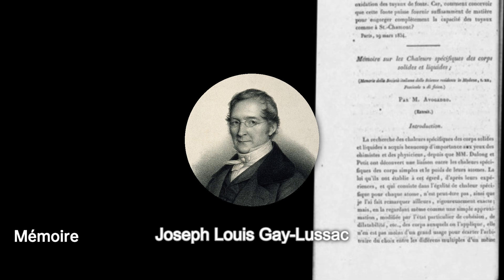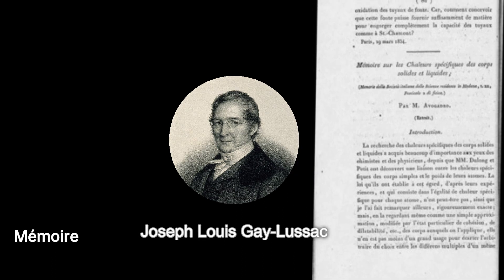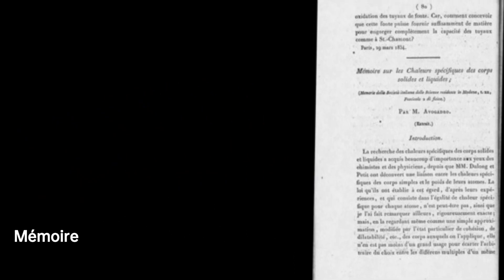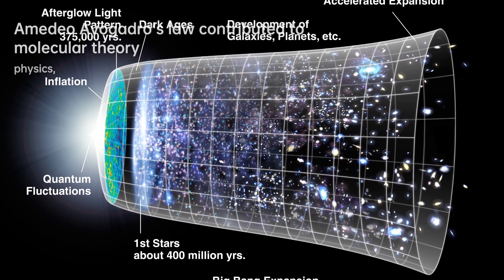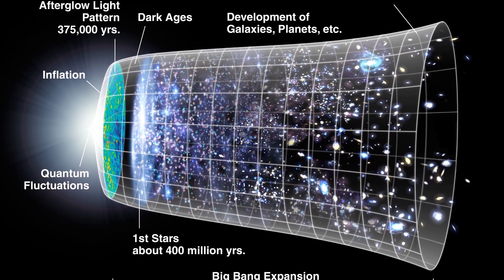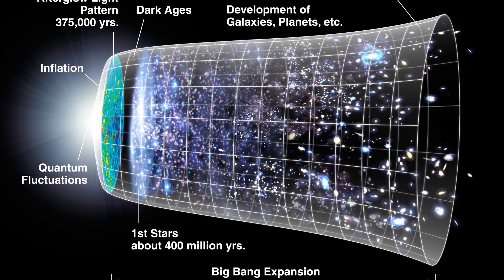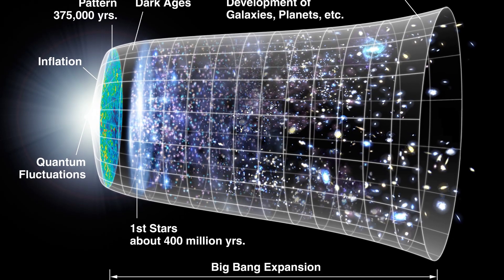This law enables chemists to compute the relative molecular mass of a gas based on the mass of a known volume sample. Avogadro's work was not without challenges, particularly in distinguishing between atoms and molecules during a time of confusion. His significant contribution was clarifying this distinction.